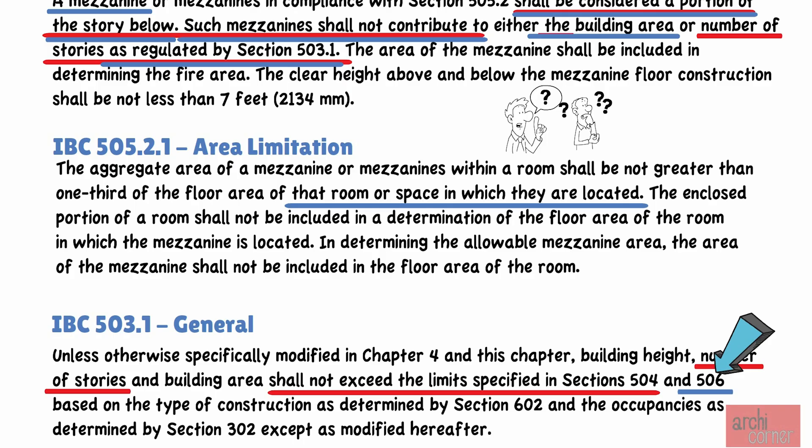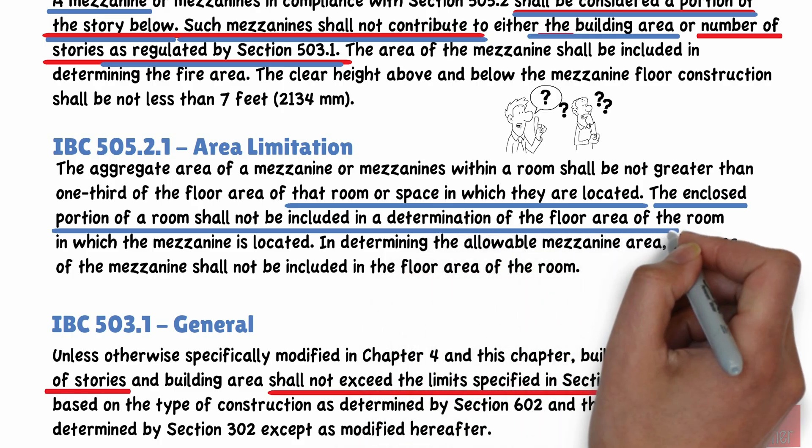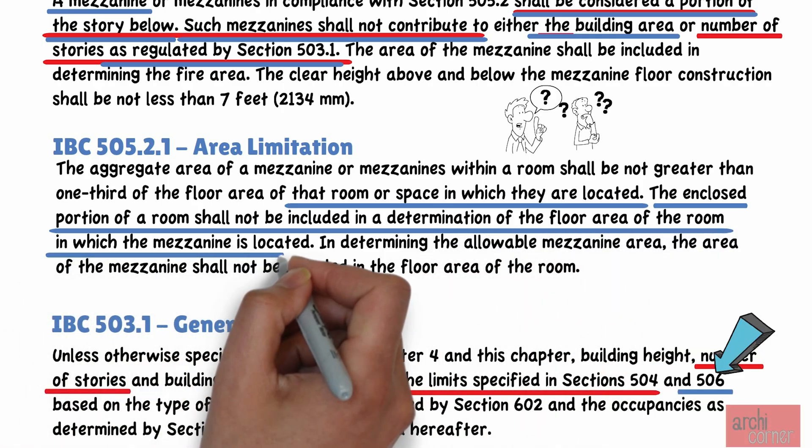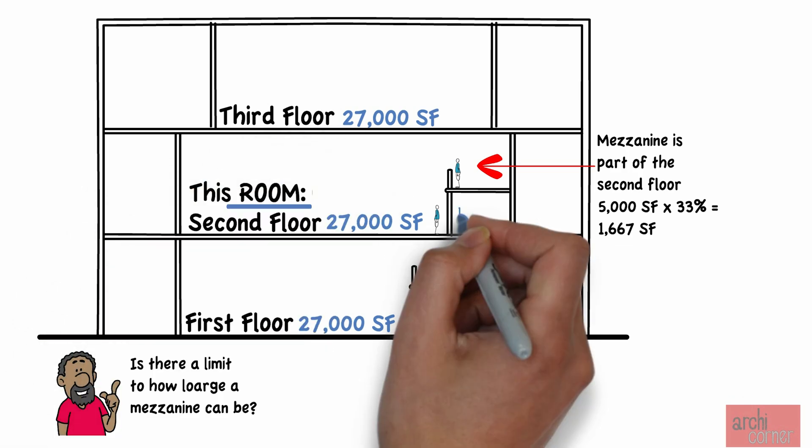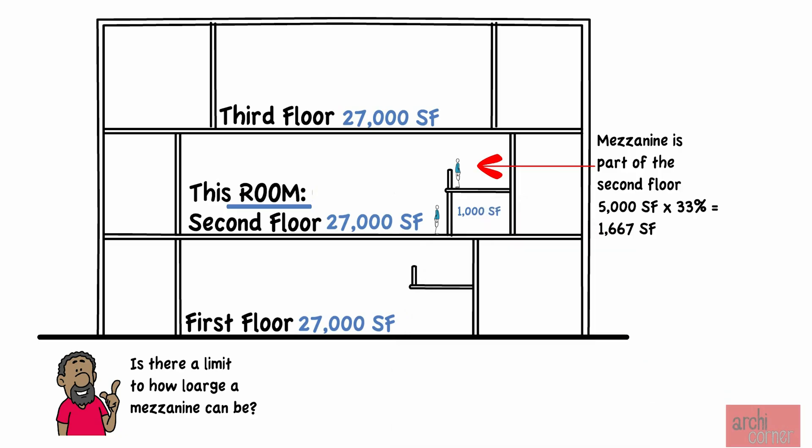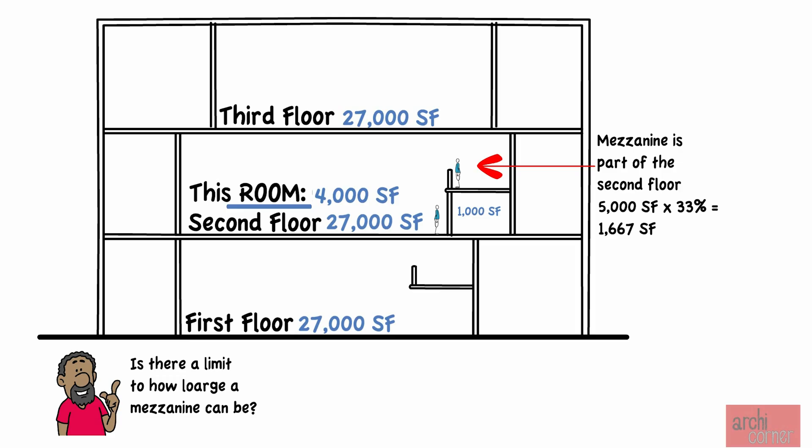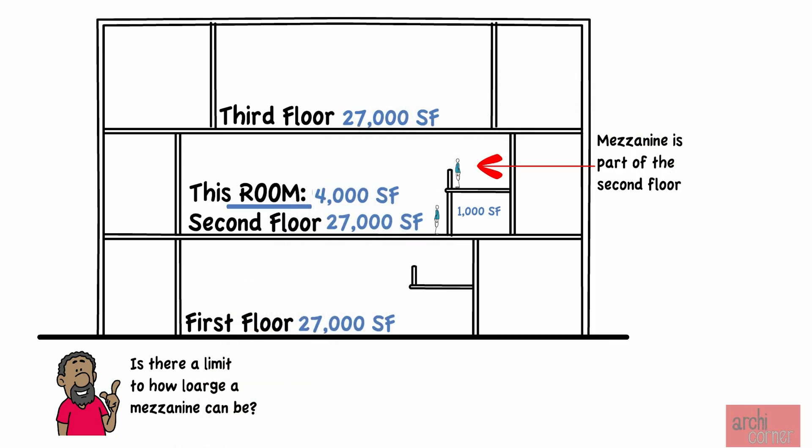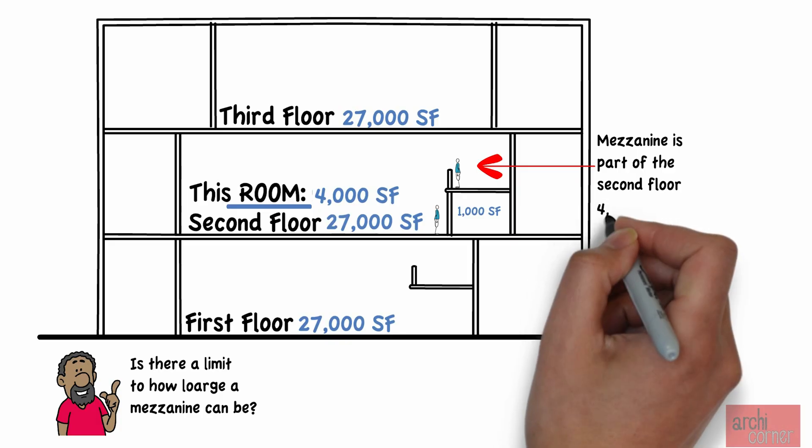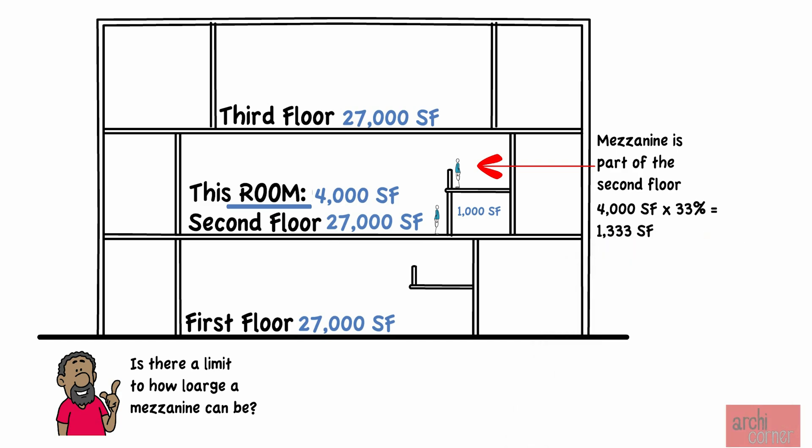But let's look at the code again. It states that the enclosed portion of a room shall not be included in the determination of the floor area of the room in which the mezzanine is located. What does this mean? Let's assume that we have an enclosed set of rooms underneath the mezzanine. That will obviously take area away from our 5,000 square feet. And let's say that the enclosed area takes up 1,000 square feet. That would mean that our room is actually 4,000 square feet. And that would in turn reduce the allowable size of our mezzanine. Instead of being allowed to be up to 1,667 square feet, we would only be allowed to have a mezzanine that is 4,000 times 33 percent, which equals 1,333 square feet.